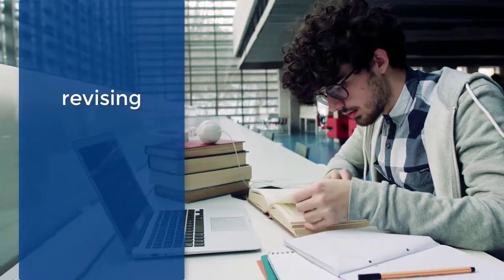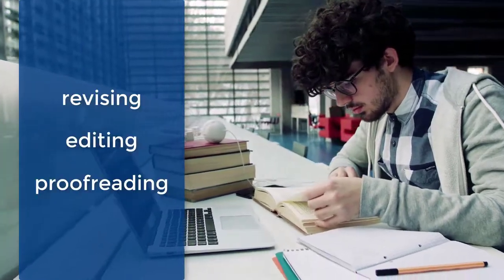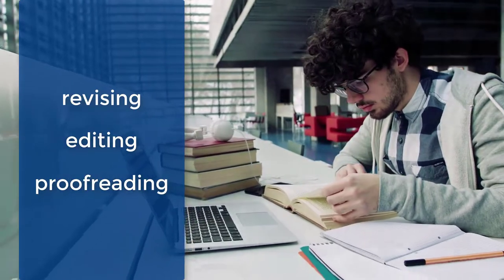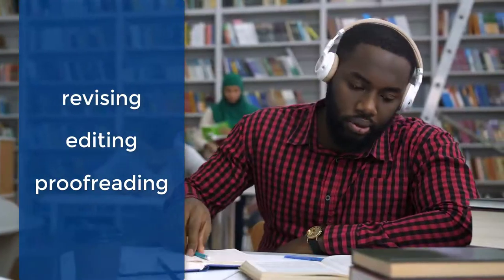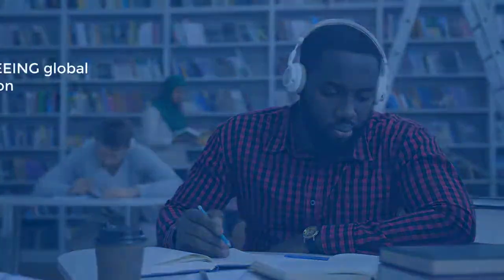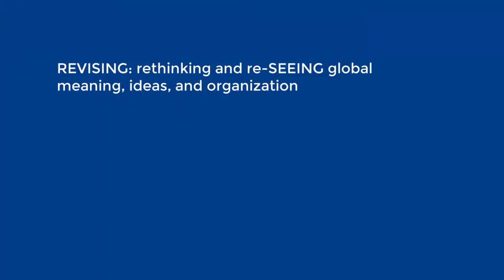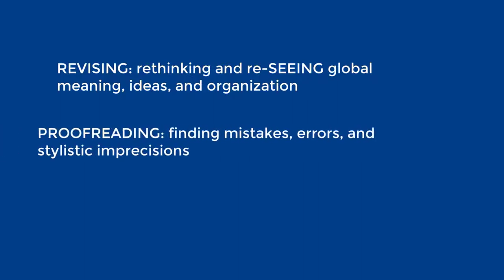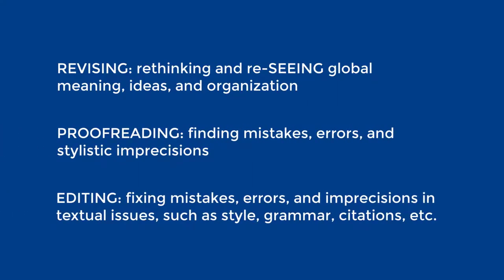When we talk about revising, editing, and proofreading, it's important to note that these three words describe very different activities that happen at different stages of writing a paper. Revision means what its name implies: to look at your paper in a different way. Proofreading and editing both refer to finding and fixing errors in your writing, with editing encompassing a focus on style, grammar, and other concerns.